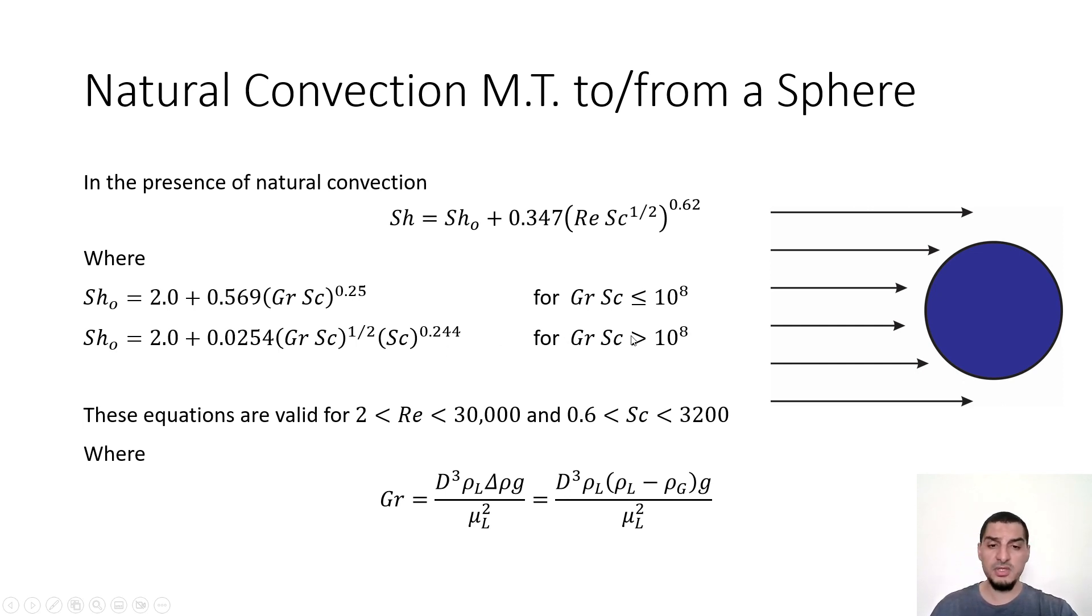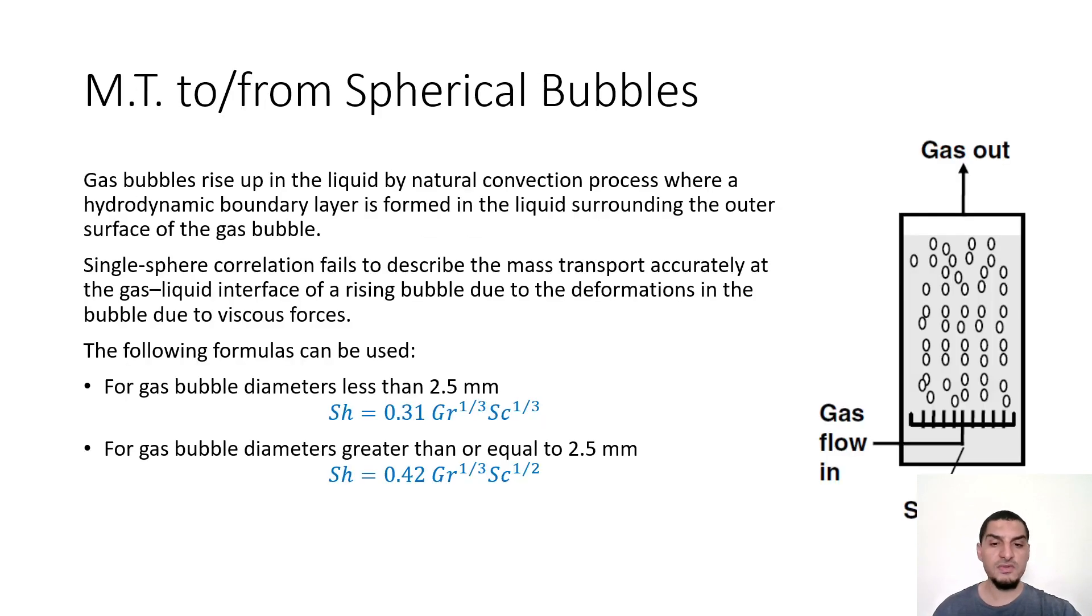And this correlation if Grashof multiplied by Schmidt number is larger than 10 to the 8. For just a quick reminder, Grashof number is D cubed rho_L delta rho multiplied by g over mu_L squared. And of course delta rho is the difference between the density of liquid and the density of gas because this is the natural convection flow dimensionless number. So this is just to give a summary for the equations.